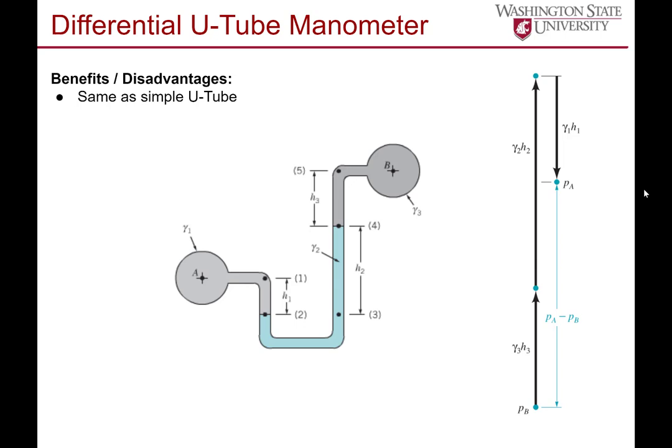The instinct is sometimes to reverse this, but as you go down you're increasing pressure, so we see that arrow coming up for H3. The same thing for gamma 2 H2, we're increasing again, then H1 is subtracted. This allows you to find the pressure difference PA minus PB referenced in this equation. Visually, this is really helpful to see the process and how the equation looks graphically.